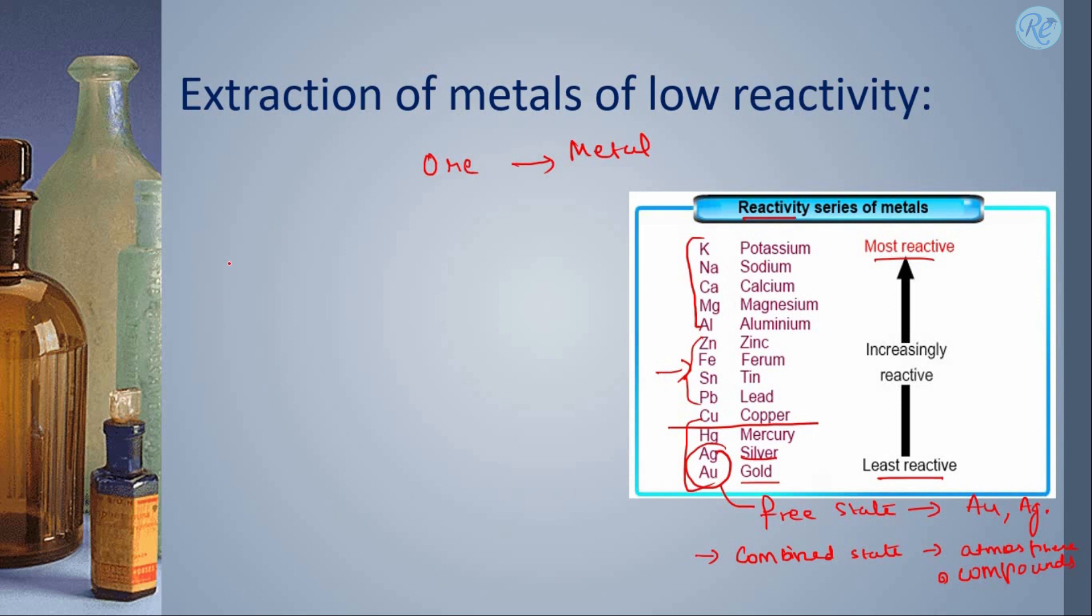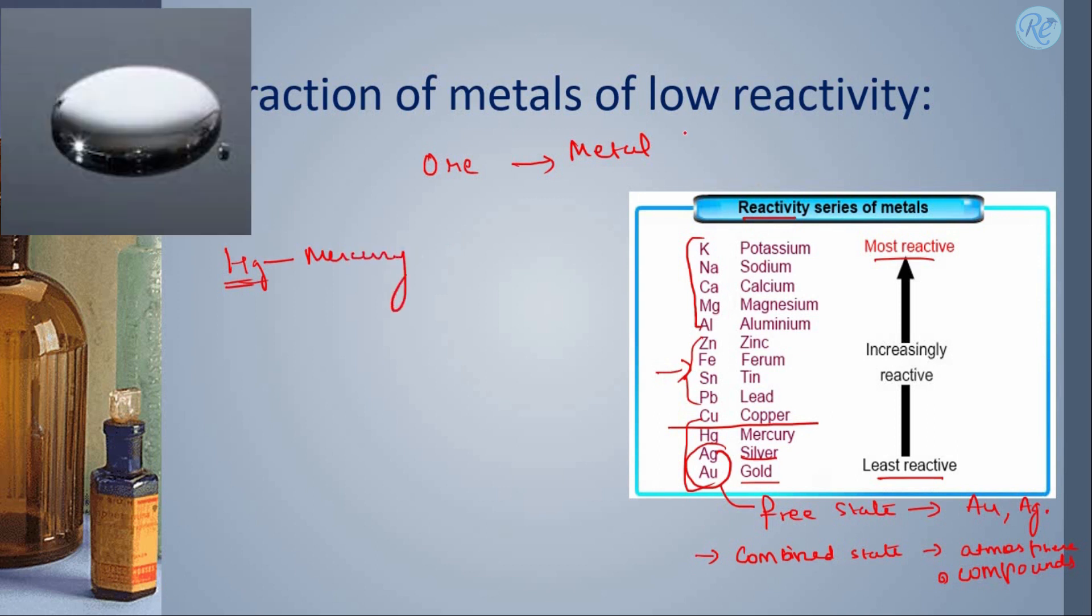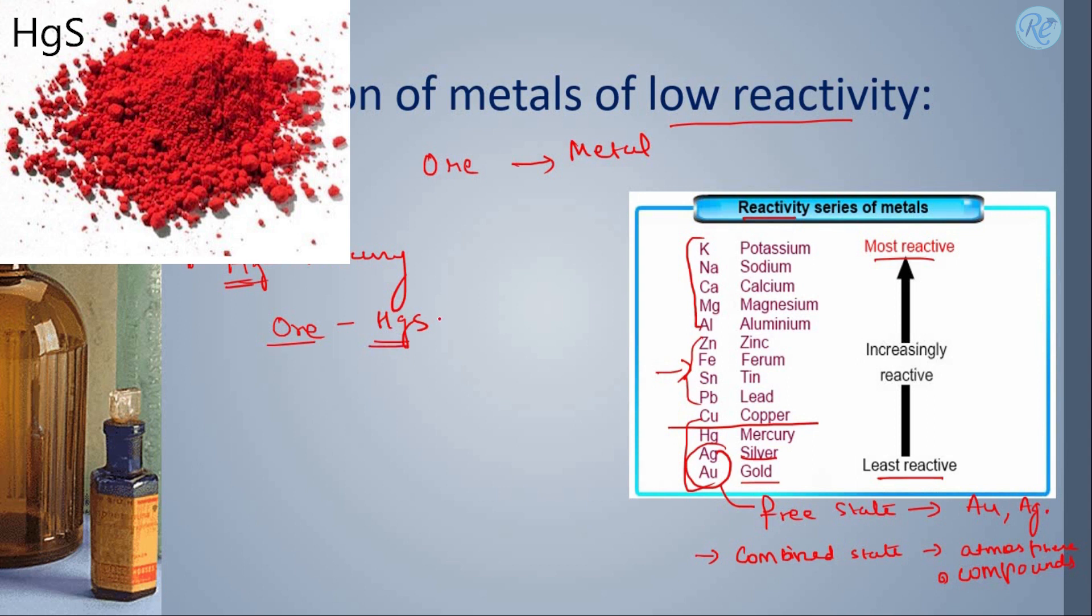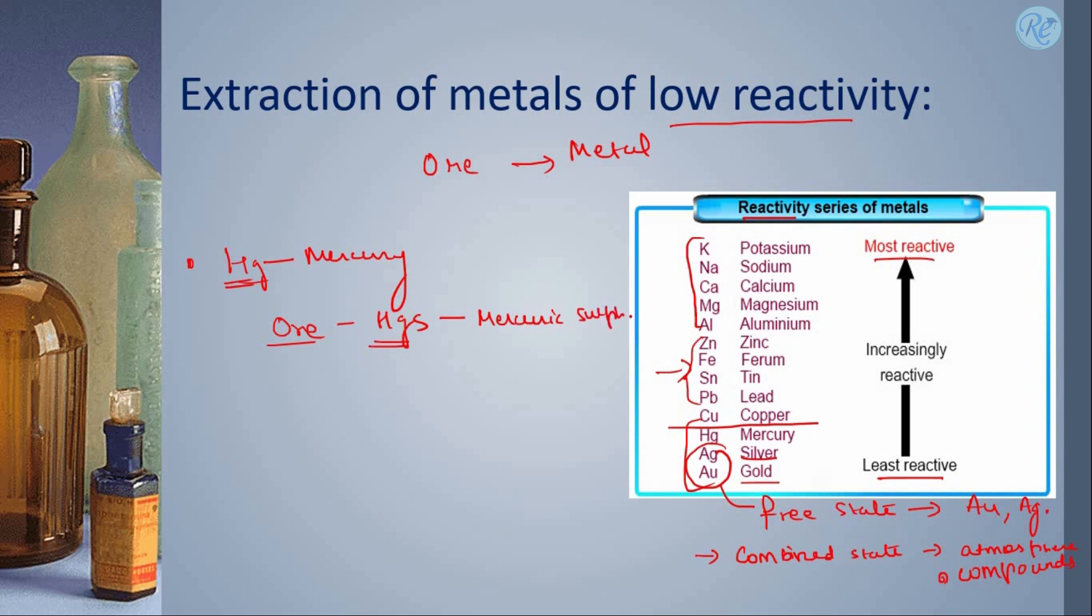Let me take an example of mercury, which has low reactivity. The ore for mercury is HgS, mercuric sulphide. This is the ore, so the procedure starts like this.